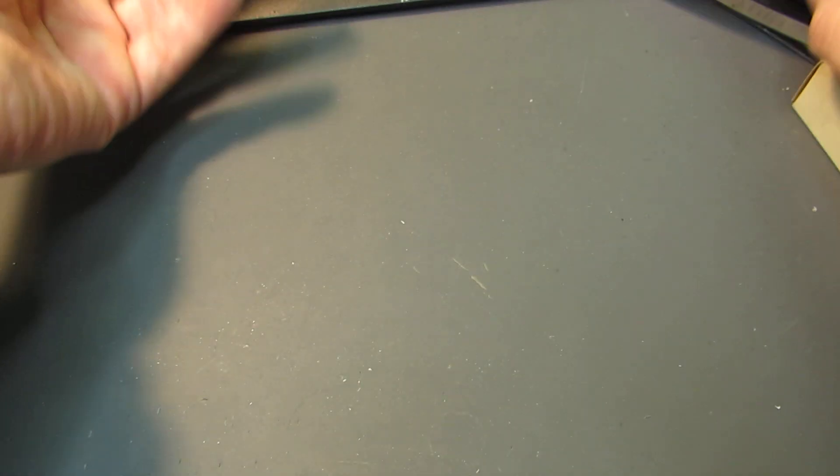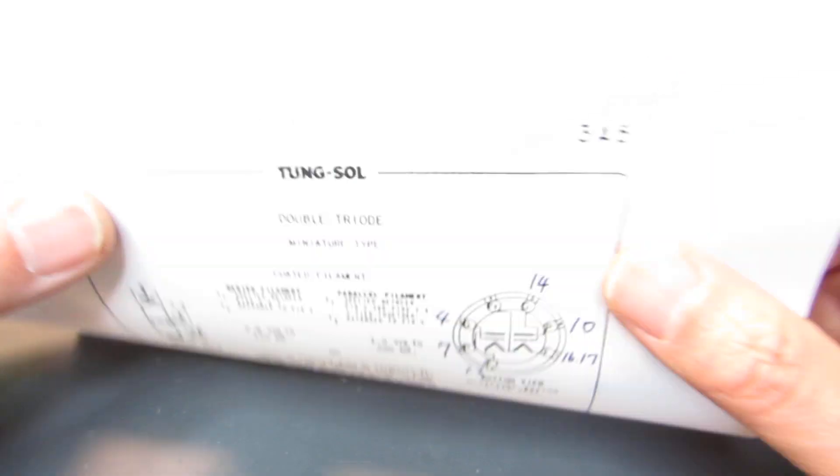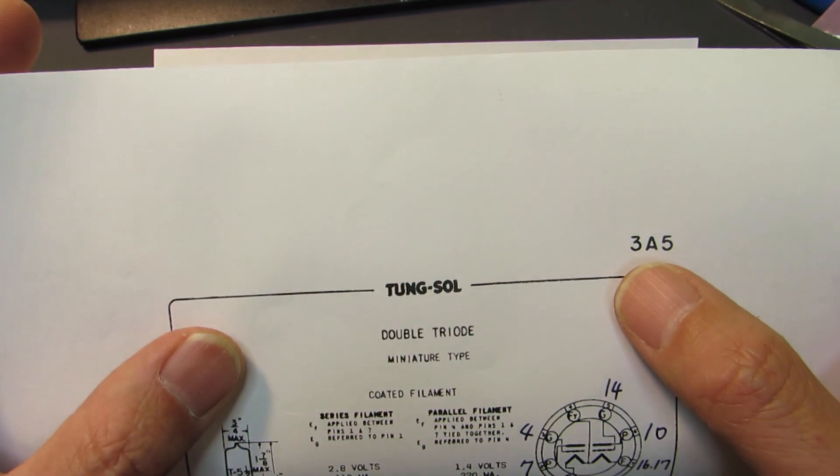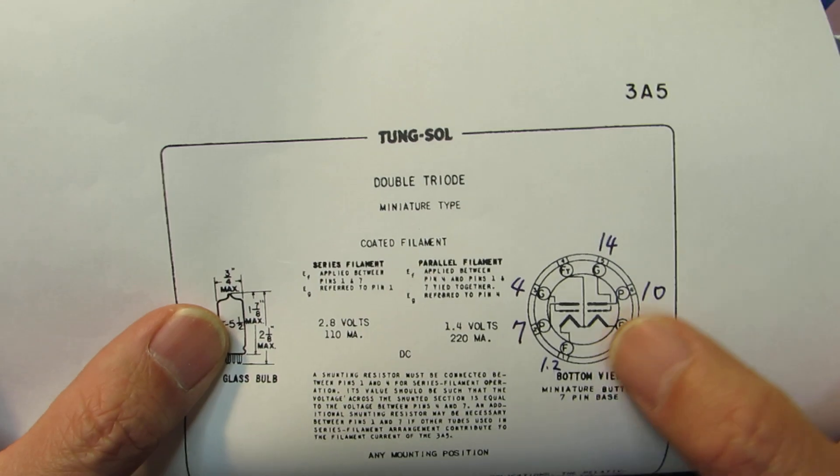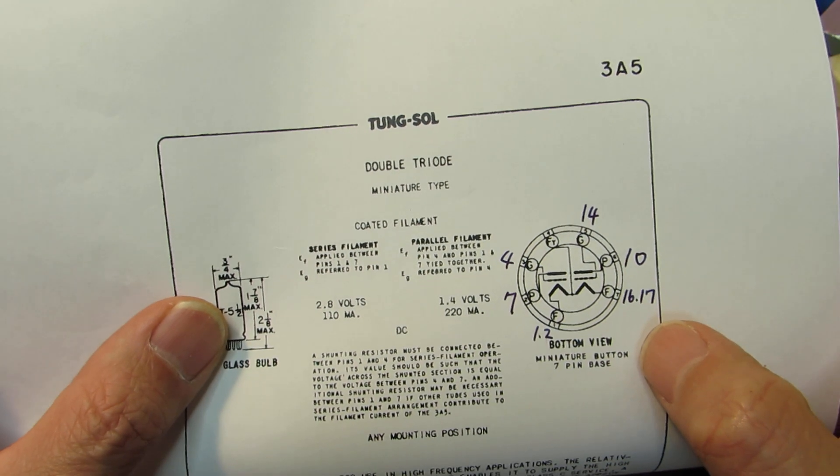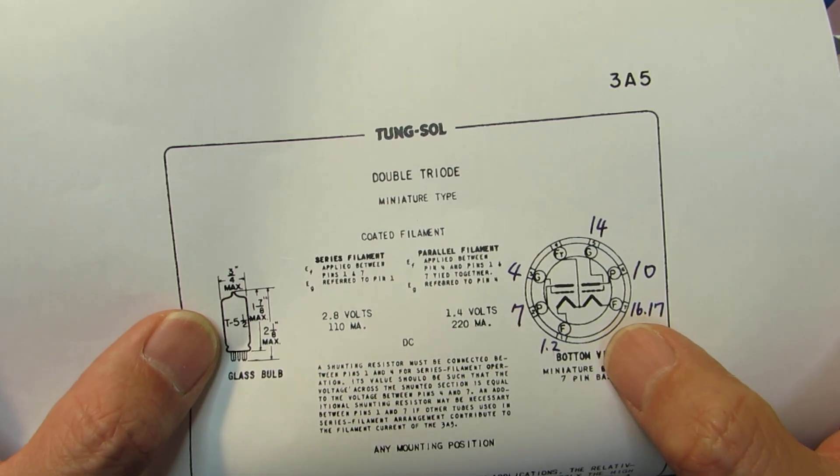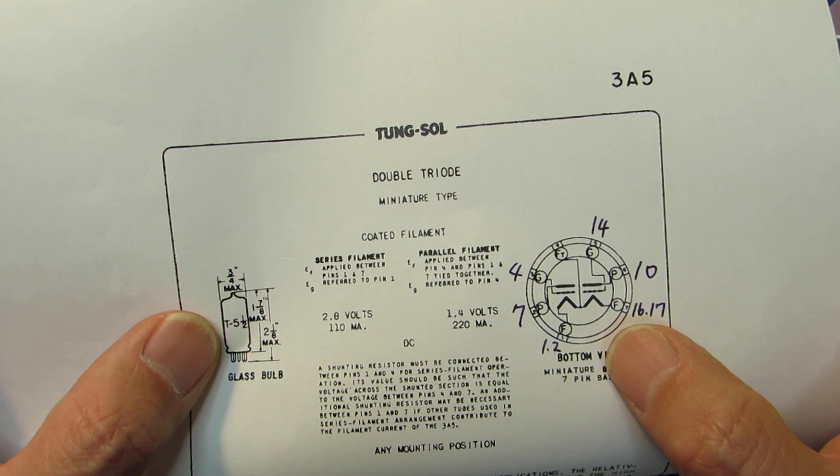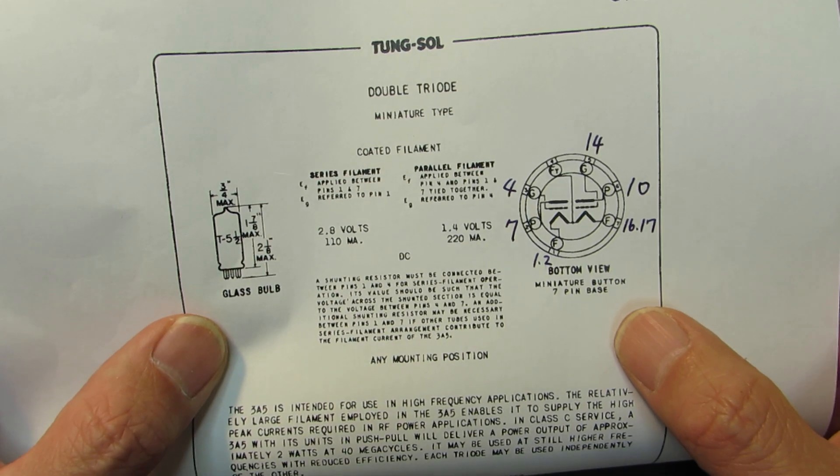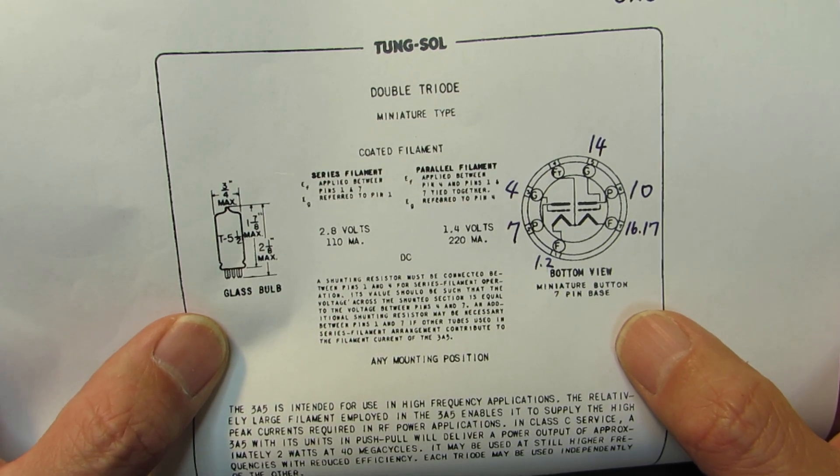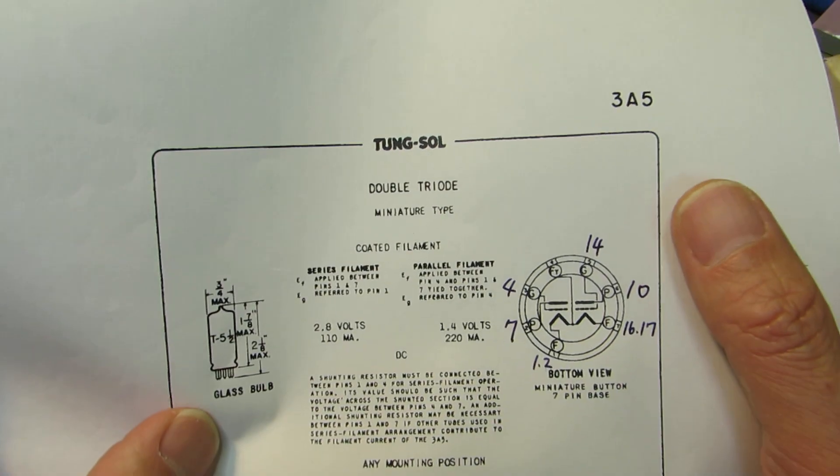I found one vacuum tube, it's a 3A5, and its structure is almost the same, because it's a twin triode, double triode. We can substitute the new tube part with this 3A5.